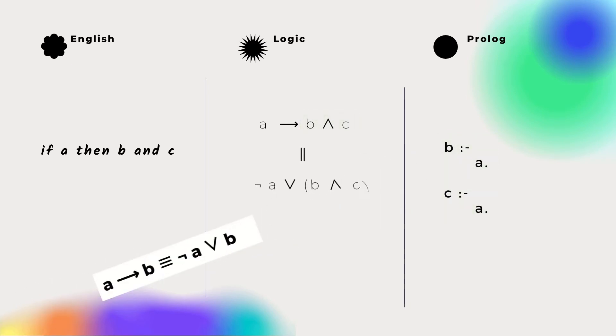You can see how with the rewrites from the start of the video. The original expression can be split into two simpler implications. Each one of these becomes an individual Prolog rule.